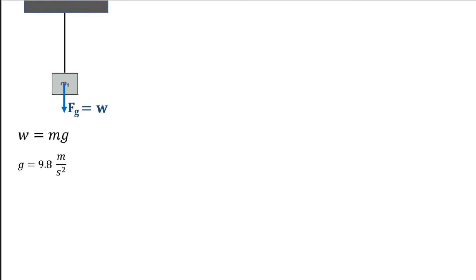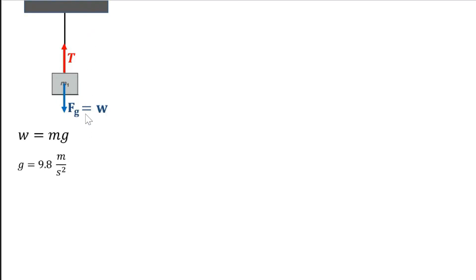Based on Newton's third law of motion, in every action there should be an equal but opposite reaction. Therefore, there should be a force that will counteract it. In this case, that is tension, because there is a rope. The gravitational pull experienced by the mass is also equal to the tension experienced by the rope, based on the first condition of equilibrium. Since our system is in equilibrium, the summation of forces is equal to 0. Everything going up is positive and everything going down is negative, so T minus weight equals 0.